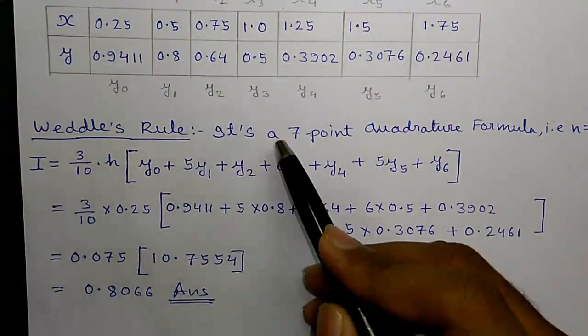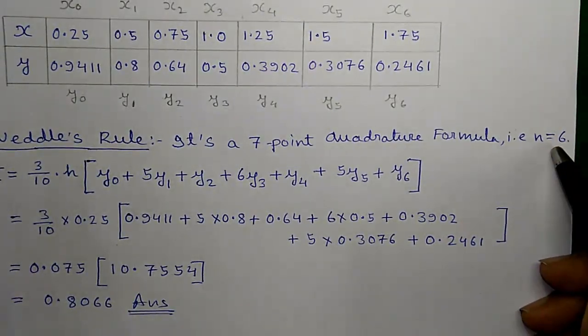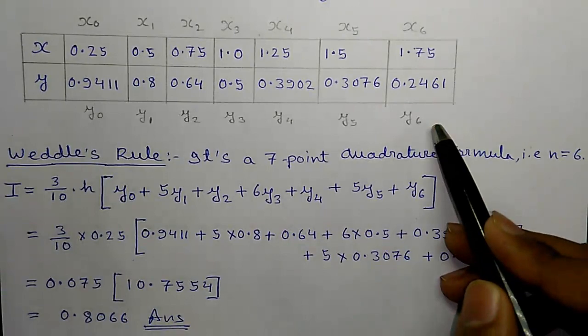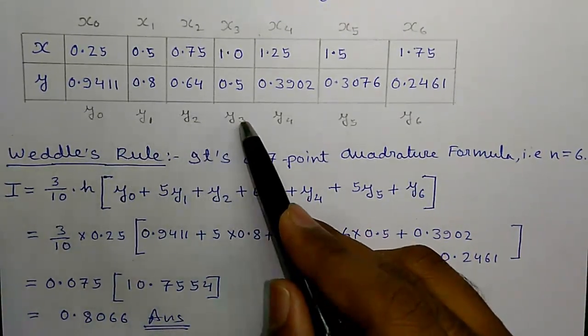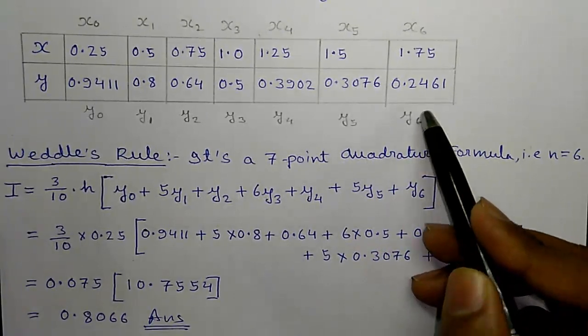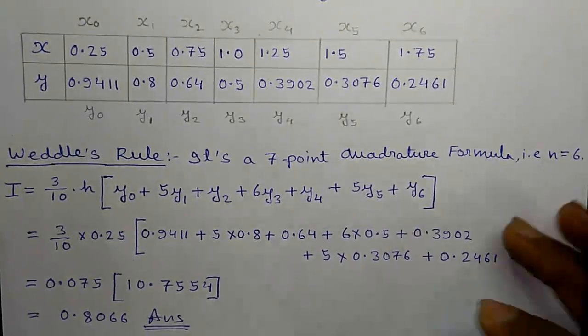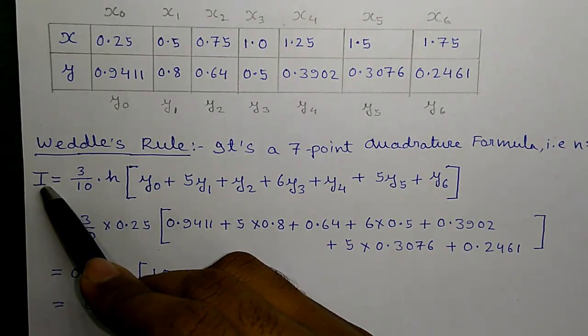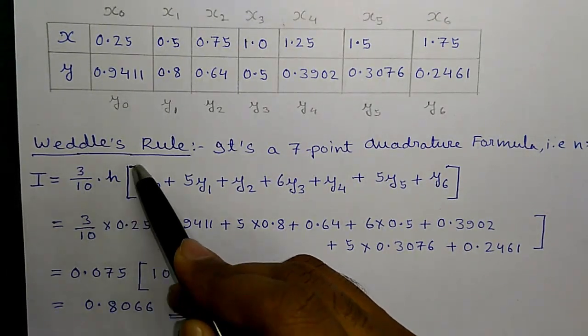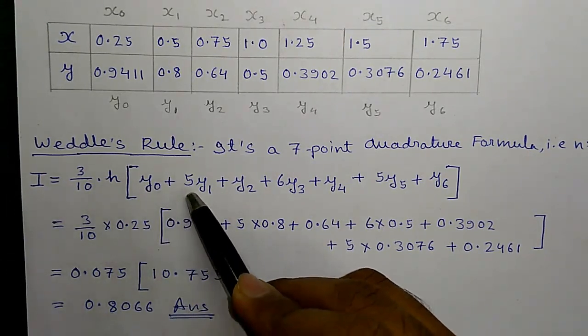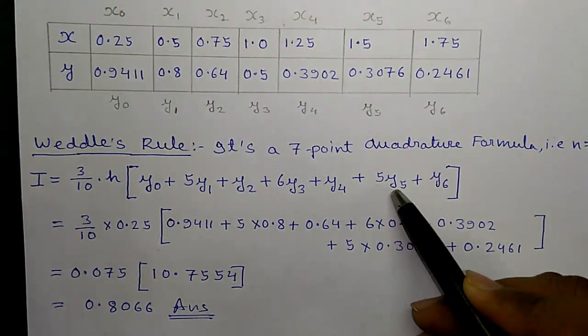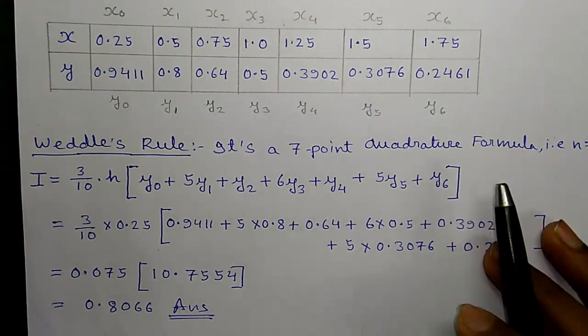Next, Weddle's rule is a 7 point quadrature formula that is n equals to 6. It is called 7 point quadrature formula because here we have 7 points of y starting from y0 to y6. We are taking 7 points and then putting that into the formula. And here is Weddle's rule which is I equals to, I stands for integrand, equals to 3 by 10 into h into y0 plus 5 into y1 plus y2 plus 6 into y3 plus y4 plus 5 into y5 plus y6.